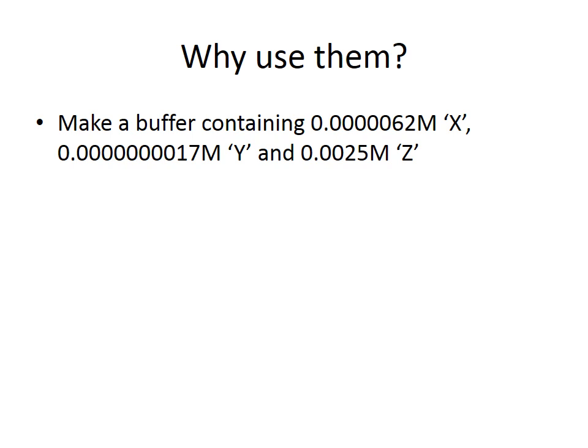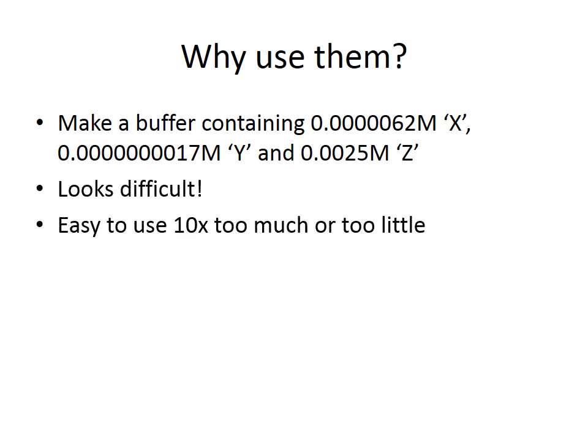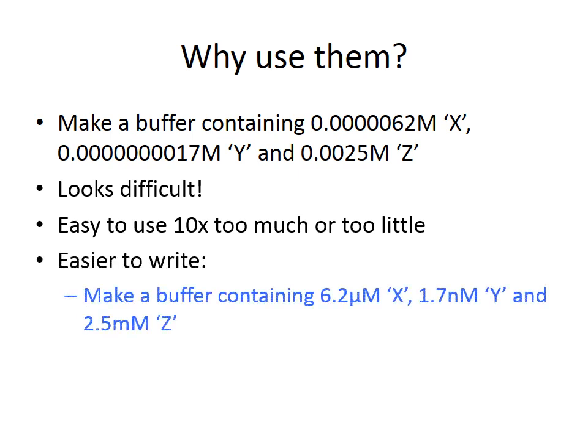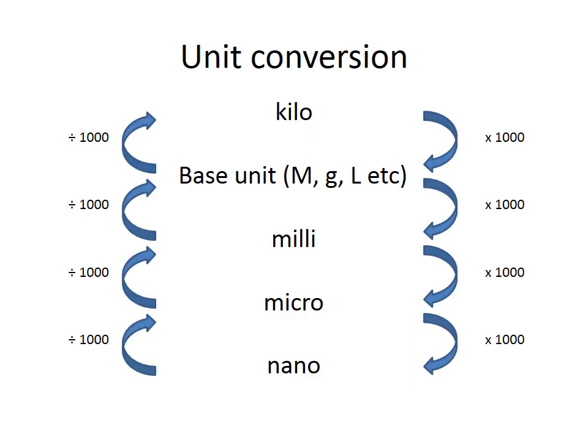So why do we use these prefixes? If you look at a recipe for a buffer written out in full numbers, it is very easy to use ten times too much or too little of a reagent by misreading the number of zeros. It is much easier to write a buffer containing 6.2 micromolar X, 1.7 nanomolar Y, and 2.5 micromolar Z. This makes the recipe simpler and you are much less likely to make mistakes when preparing these reagents. It is important to be able to convert between units easily.